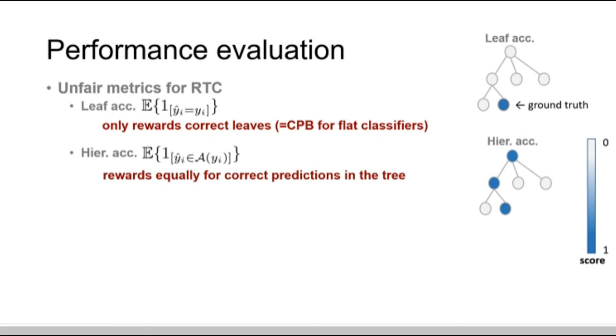Another metric, hierarchical accuracy, rewards equally for correct predictions in the tree no matter how deep the predictions are. These metrics fail to reward a trade-off between classification granularity and accuracy, so they are not suitable for RTC.